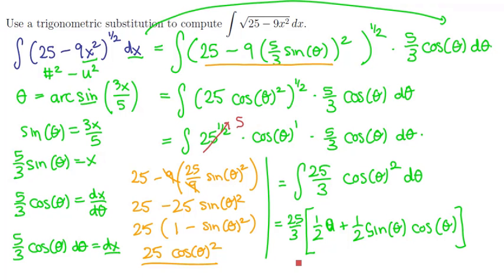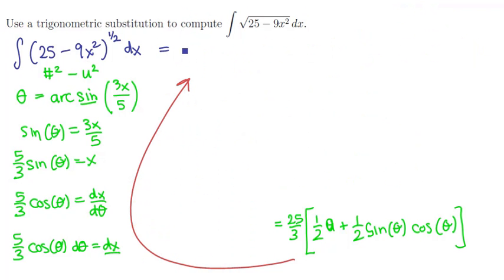So now we need to back substitute. We're going to need some space. So bringing this up to the top we will have 25 thirds times let's pull that 1 half out.